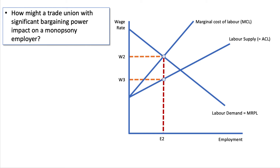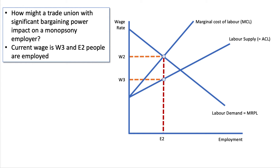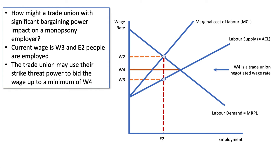How might a trade union with significant bargaining power — one with the credible threat of strike action and negotiating influence — impact on a monopsony employer? Going back to the diagram: the current wage is W3 and E2 people are employed. The profit-maximising monopsony employs up to E2 but only pays W3, as that's what the average cost of the labour supply curve dictates. The union could use collective bargaining power to negotiate a pay rise.